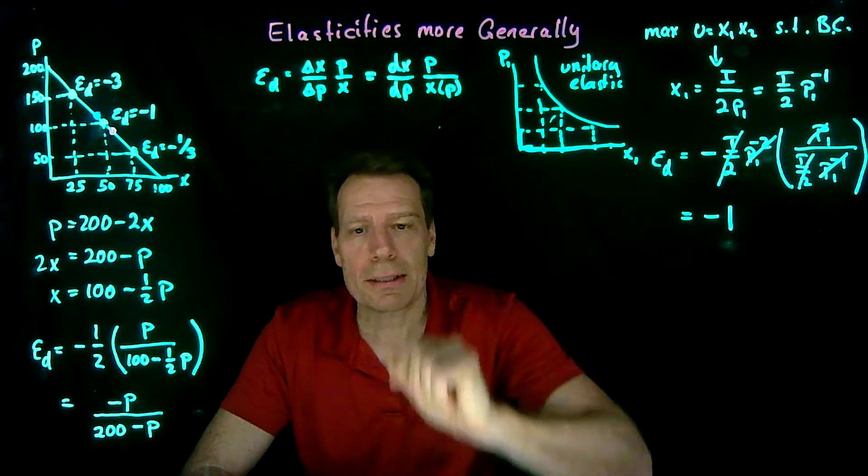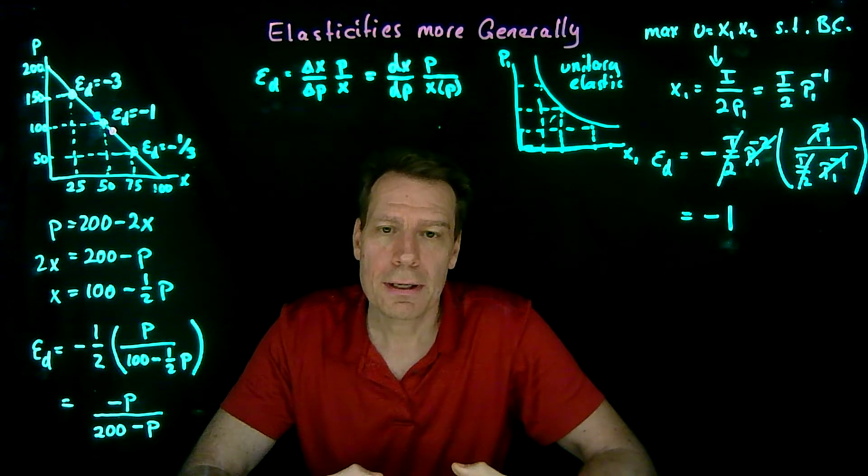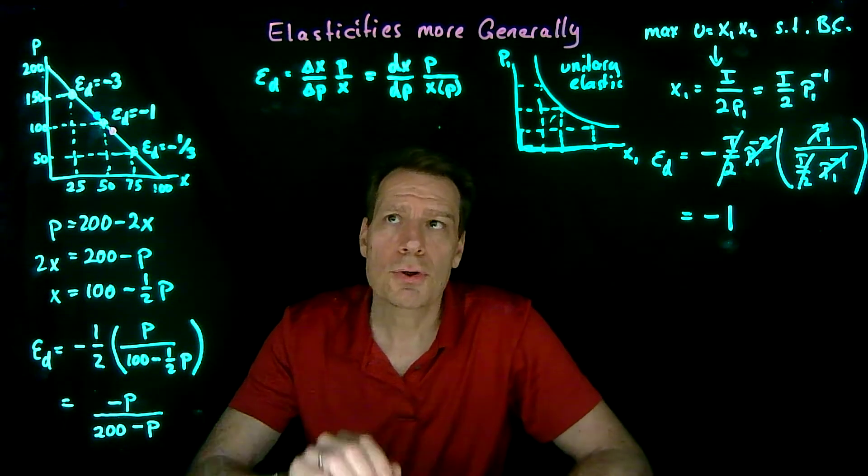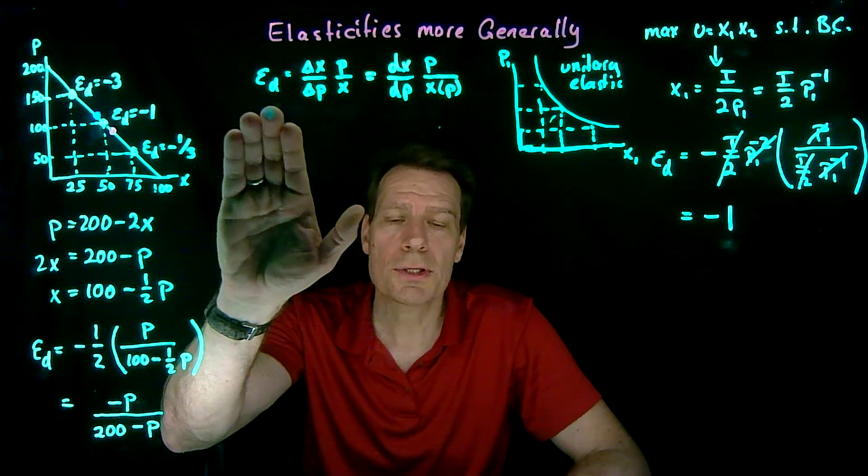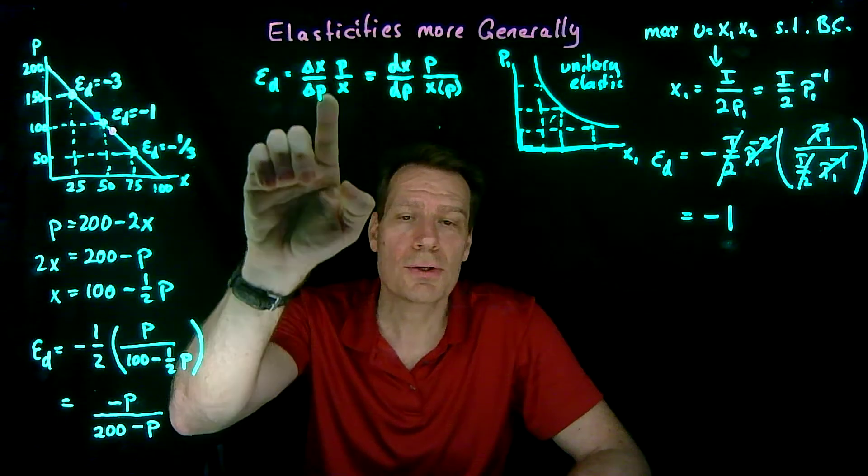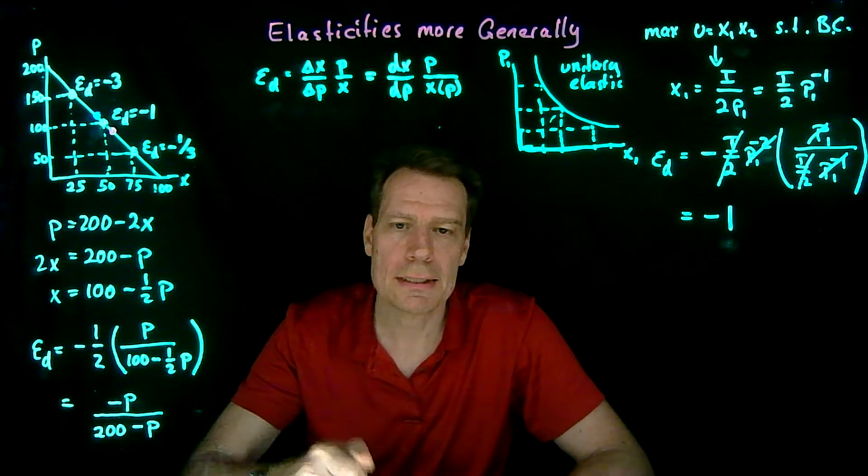Knowing that this is how we think about elasticities with respect to the price of the good itself can also get us to think about other kinds of elasticities. So here we're thinking about the consumer's responsiveness of their consumption of the good X with a change in that good's price. Sometimes we actually call it an own price elasticity.